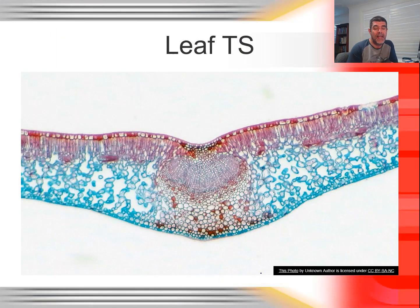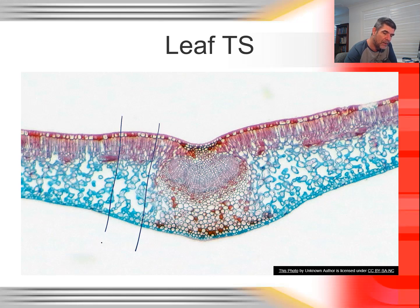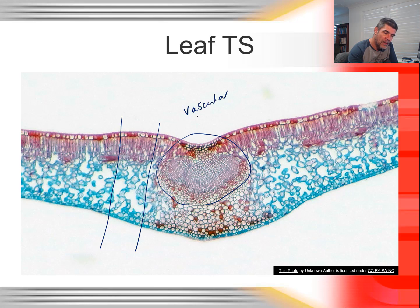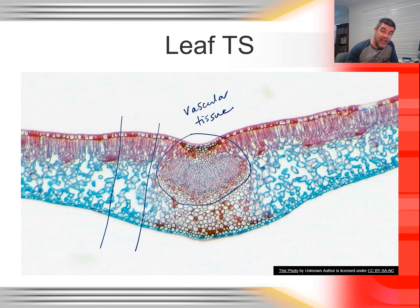The first thing we want to do is look at a transverse section through a leaf. You'll notice that with the previous slide, we had a section of our leaf which had no vein. You can see that here is vascular tissue, which will consist of both xylem and phloem. But that vascular tissue doesn't always appear in our sections, depending on how we've cut our leaf samples — we may or may not have that vascular tissue present.